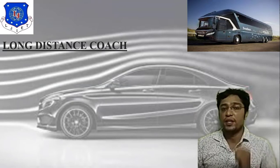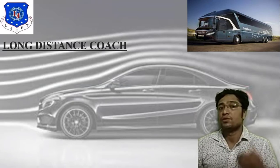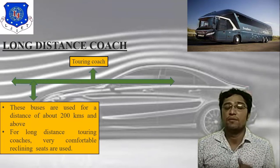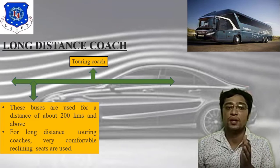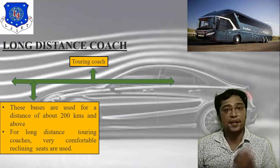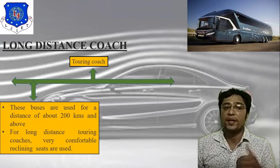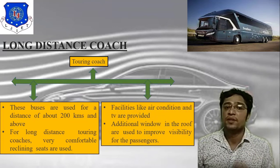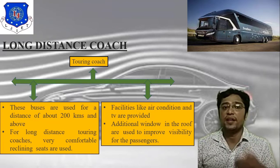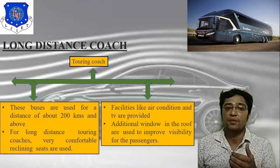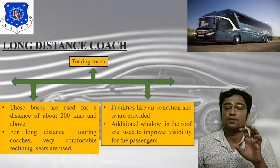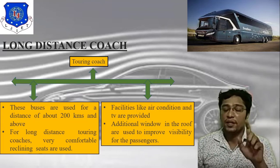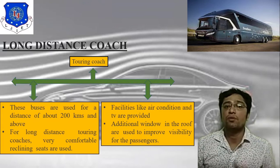For long distance travel, the touring coach is used for distances of about 200 km and above. These coaches provide very comfortable reclining seats and facilities like air conditioning and TV. Additional windows in the roof are used to improve visibility for passengers. The kilometer range is significantly higher compared to a minibus or town bus.